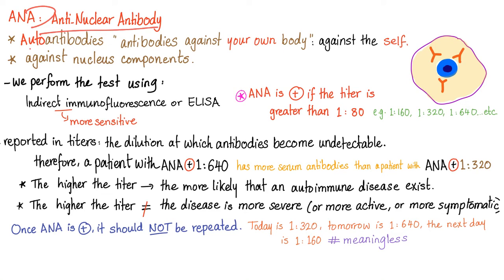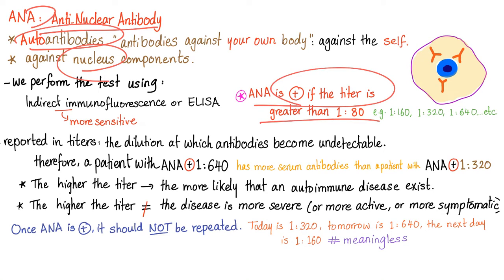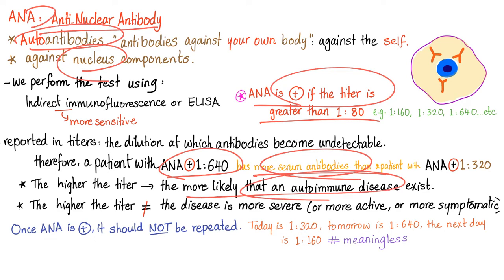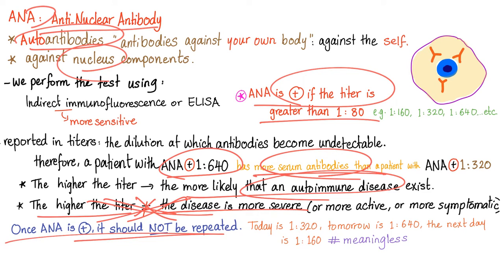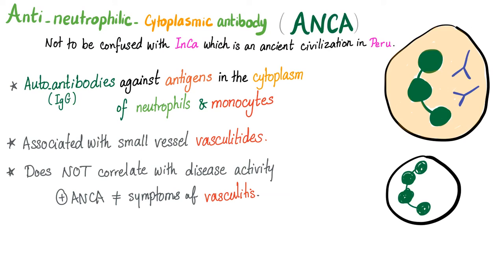ANA — anti-nuclear antibodies — are autoantibodies against your nucleus. It's only positive if the titer is greater than 1 over 80. The higher the titer, the more likely you have more serum autoantibodies and therefore the more likely you have an autoimmune disease. But a higher titer doesn't mean the disease is more severe — it has nothing to do with disease severity or symptoms. That's why you should never repeat ANA.